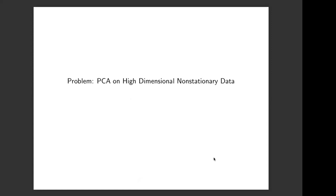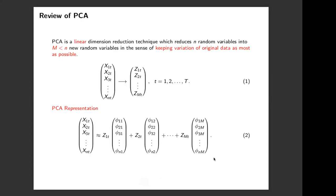PCA is a dimension reduction technique. Originally, we have small n random variables where the dimension small n is very large compared with our sample size capital T. In this case, we need some dimension reduction technique. PCA gives us a new set of random variables, denoted by Z, with capital M new random variables — much smaller than our original dimension small n. Our original random variables can be represented by our new random variables in this way. This is a traditional PCA representation.